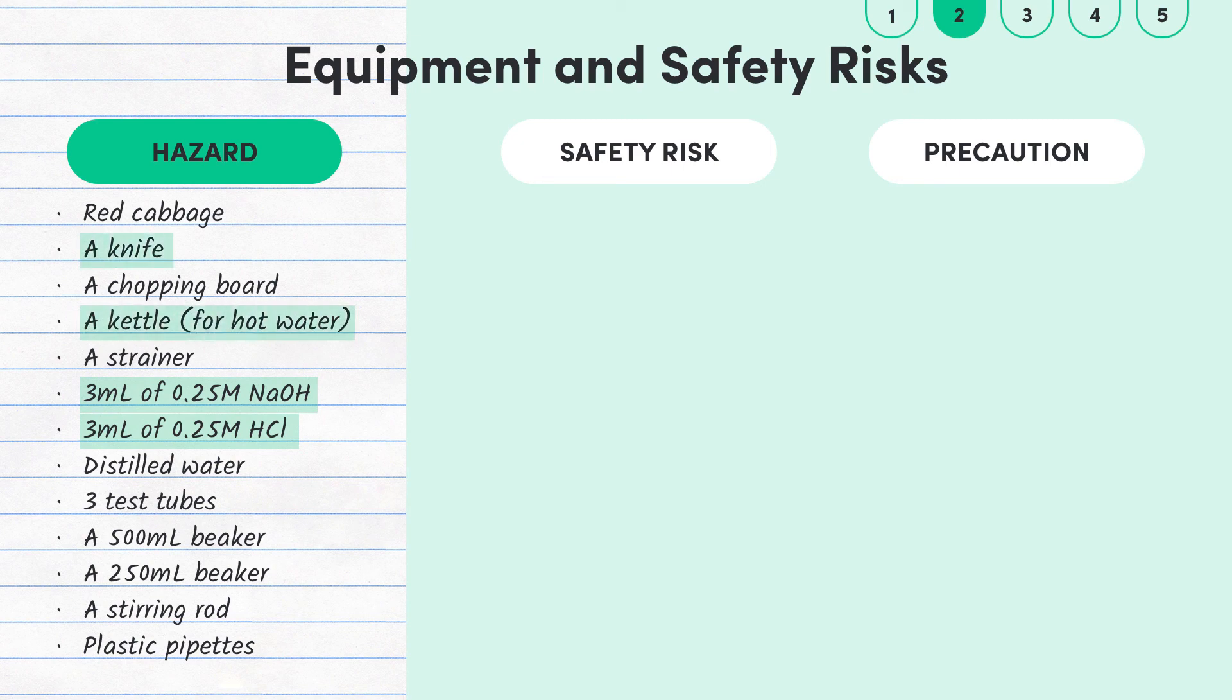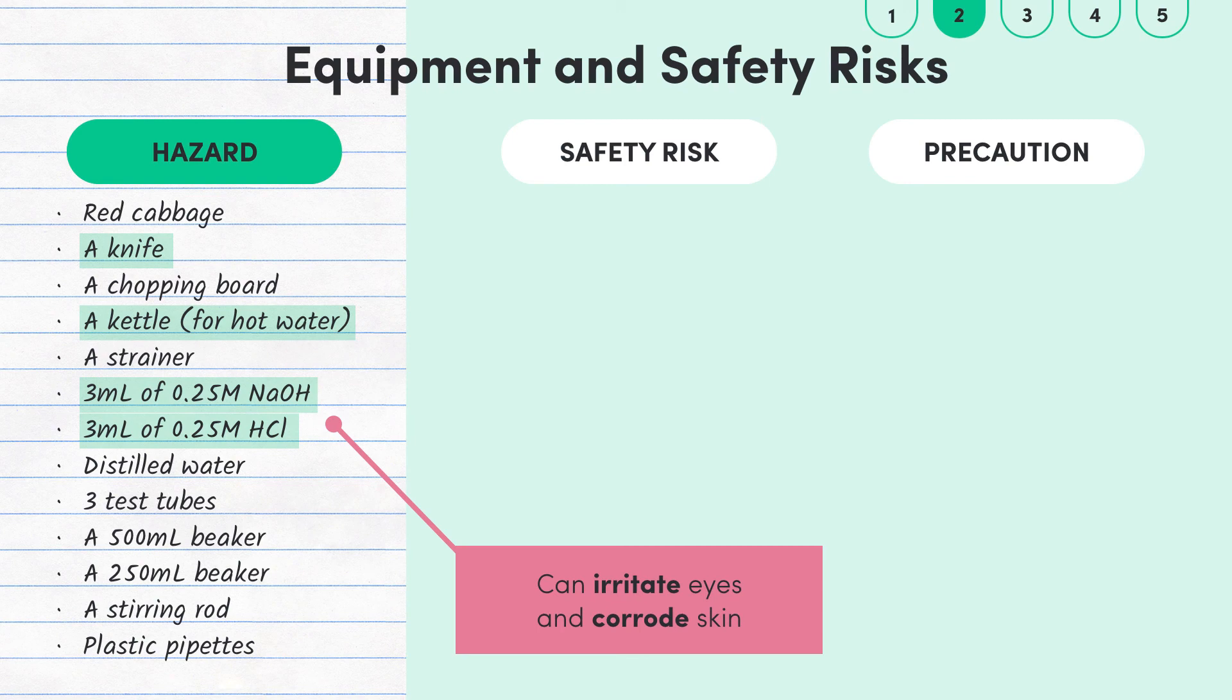The risk of using sodium hydroxide is that it can irritate eyes and can corrode your skin. The safety precaution we can take here is to wear safety glasses and a lab coat to protect our eyes and skin. Hydrochloric acid has pretty much the same risks and safety precautions in this experiment.